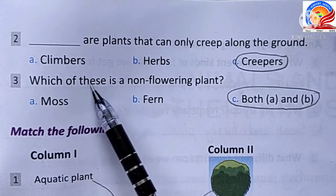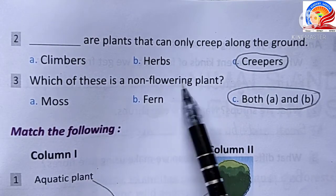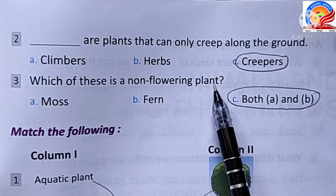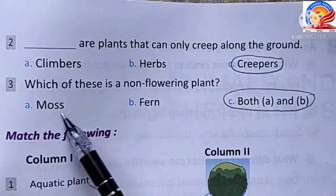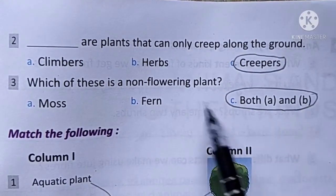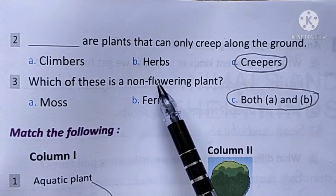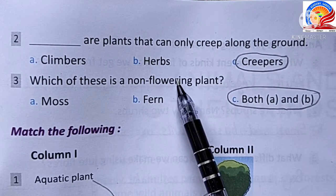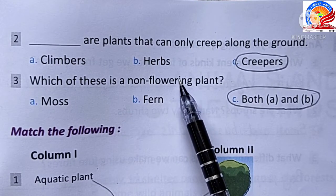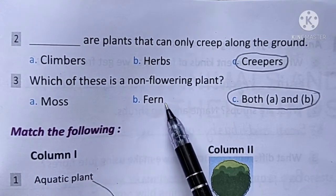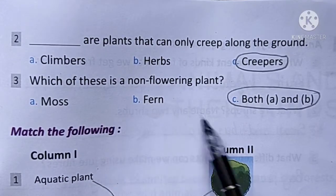Which of these is a non-flowering plant? Options: moss, fern, both A and B. Non-flowering plants are those that never produce flowers. Both moss and fern are non-flowering plants. The answer is both A and B.